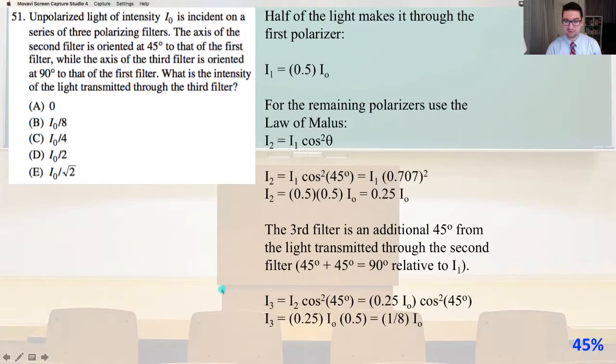Half of the light makes it through the first polarizer, so I₁ equals 0.5 I₀, the initial intensity. For the remaining polarizers, we use the law of Malus, where I₂ equals I₁ times cosine squared of theta. I₂ equals I₁ cosine squared of 45 degrees equals I₁ times (0.707)². 0.707 squared is 0.5, so I₂ equals 0.5 times 0.5 times I₀ equals 0.25 I₀.